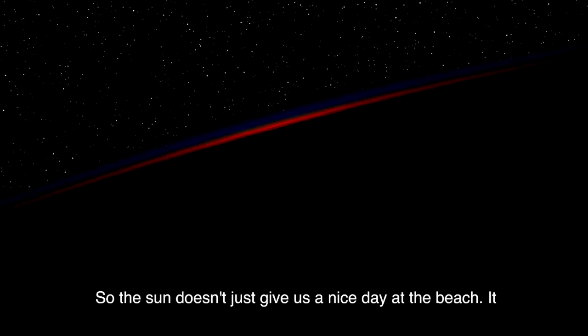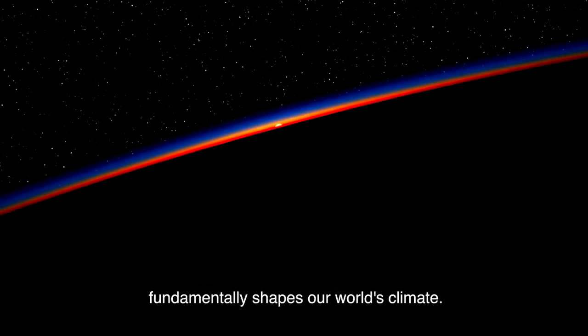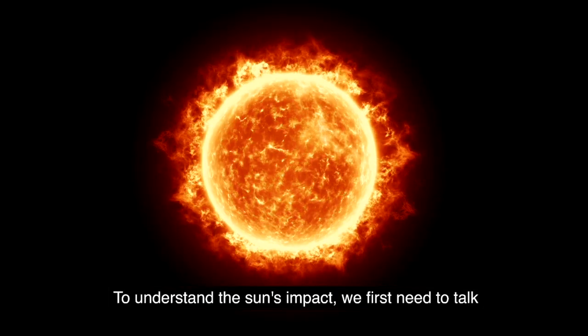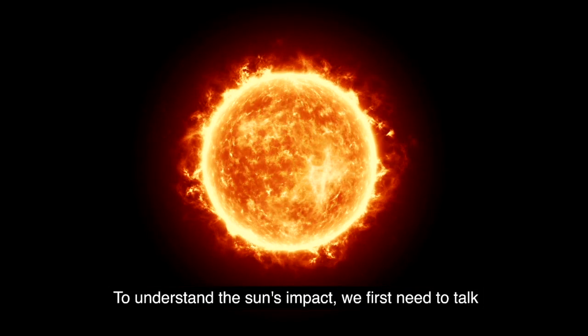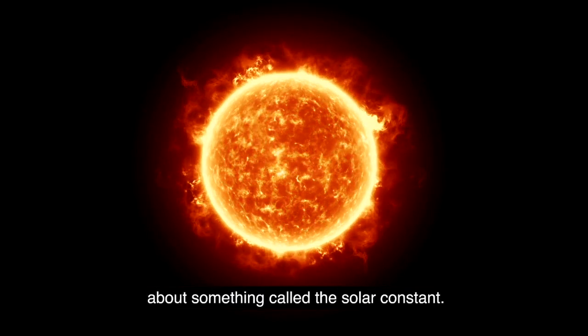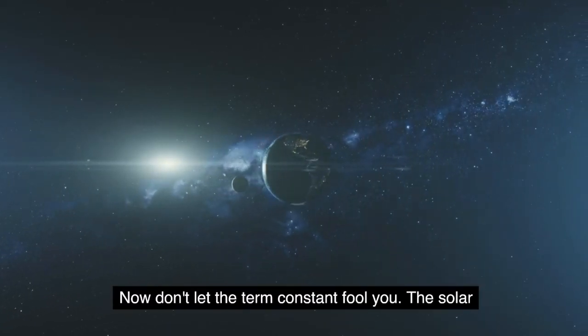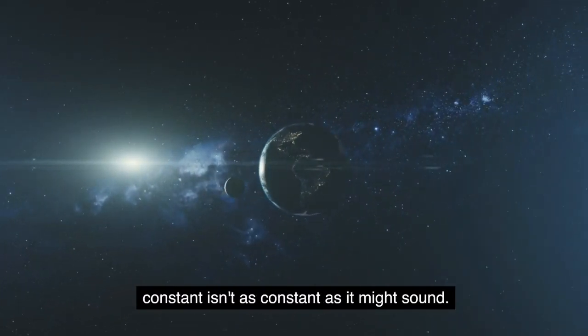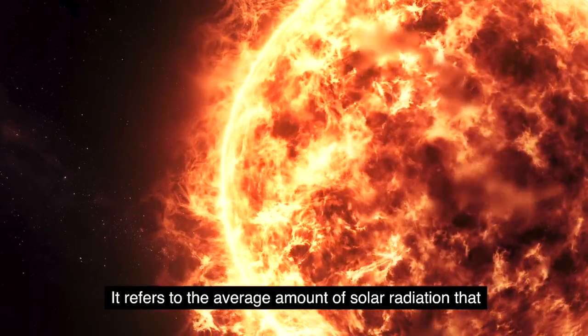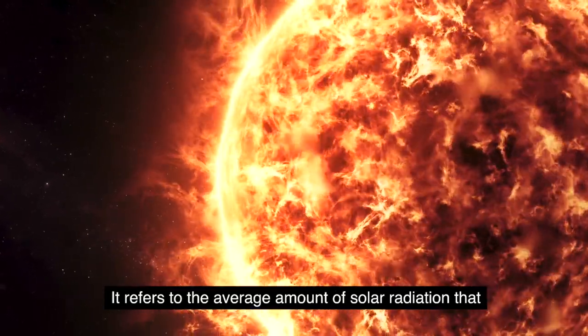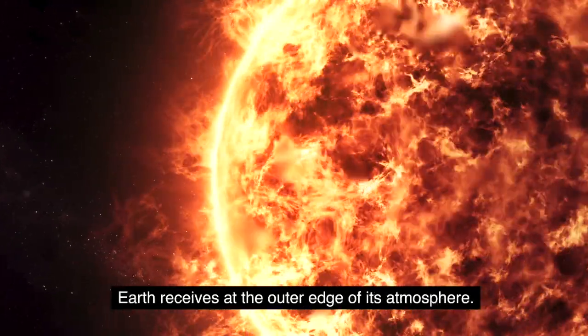So, the sun doesn't just give us a nice day at the beach, it fundamentally shapes our world's climate. To understand the sun's impact, we first need to talk about something called the solar constant. Now, don't let the term constant fool you. The solar constant isn't as constant as it might sound. It refers to the average amount of solar radiation that Earth receives at the outer edge of its atmosphere.